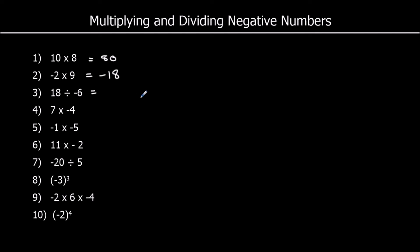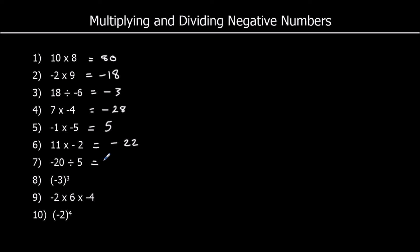Question 3: a positive divided by a negative is negative, and 18 divided by 6 is 3, so negative 3. Question 4: a positive times a negative is negative, and 7 times 4 is 28, so negative 28. Question 5: a negative times a negative is positive, and 1 times 5 is 5. Question 6: a positive times a negative is negative, and 11 times 2 is 22, so negative 22. Question 7: a negative divided by a positive is negative, and 20 divided by 5 is 4, so negative 4.